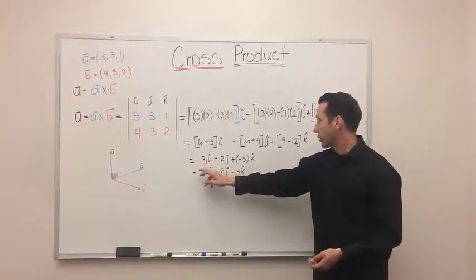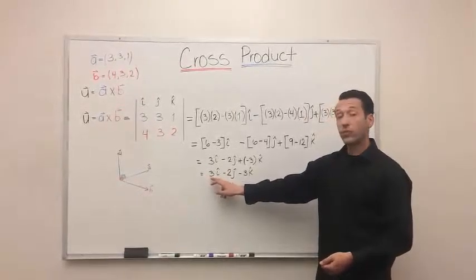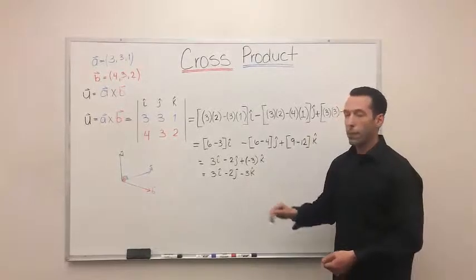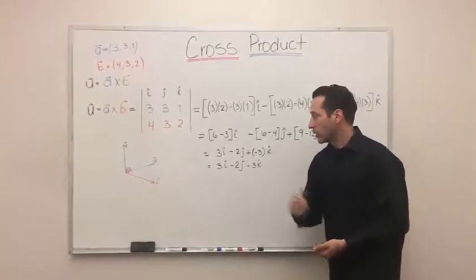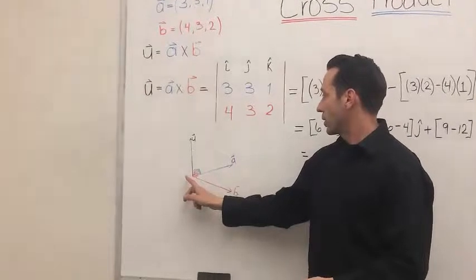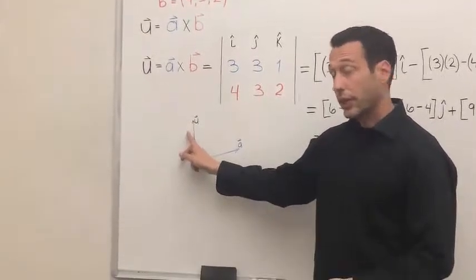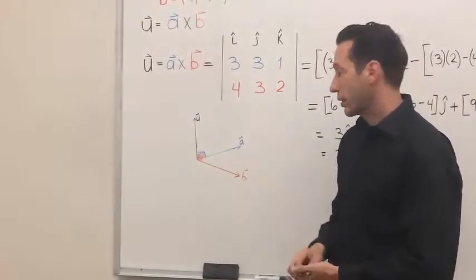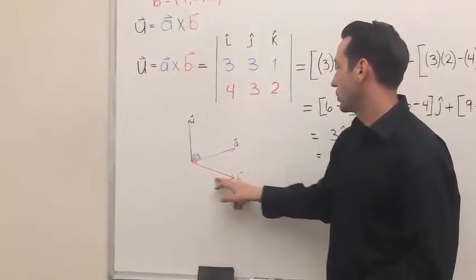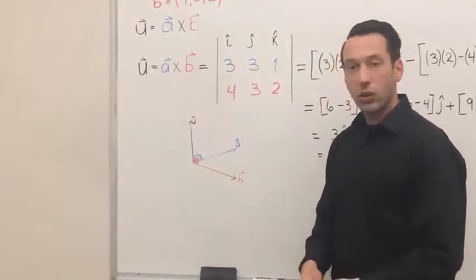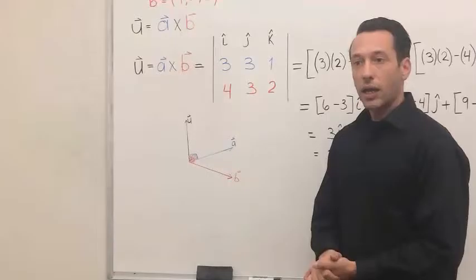The final product here, you have 3I, minus 2J, minus 3K. And essentially what you've done, this new vector, is a third and separate vector that is perpendicular to the original two vectors, also called a normal vector.